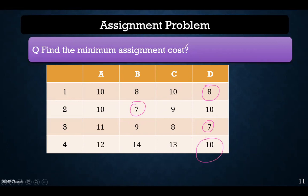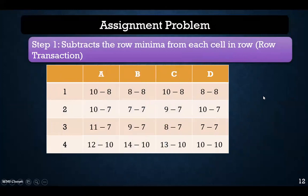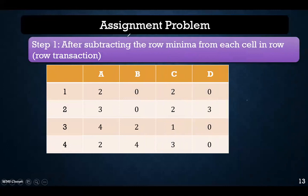We perform the row transaction by finding the minimum value in each row and subtracting it from remaining cells. The row minima are 8, 7, 7, and 10, and we subtract those values accordingly. This is the matrix obtained after the row transaction — we have found the row minima and subtracted them, which we call the row transaction.